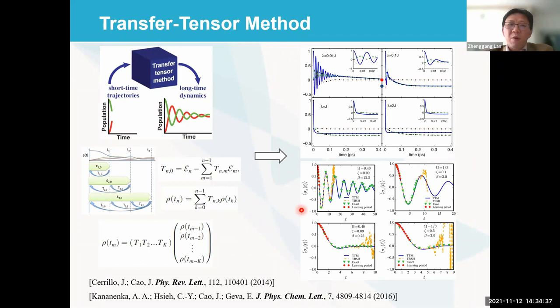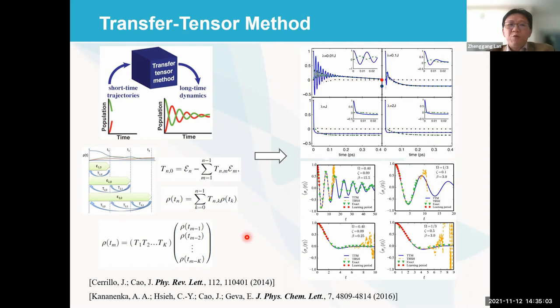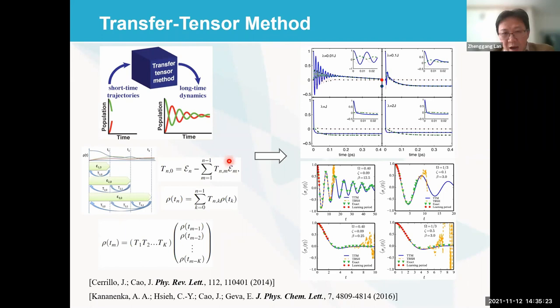For this reason, we wondered whether it is possible to do something different. A few years ago, Professor James Cao at MIT proposed an interesting approach called the transfer tensor approach. He basically built a dynamical map to capture the short-time dynamics evolution, particularly the dynamical correlations of the whole quantum evolution. If we can build such a transfer tensor dynamical map using short-time propagation, we can then use this tensor to propagate the quantum evolution to arbitrary long times.